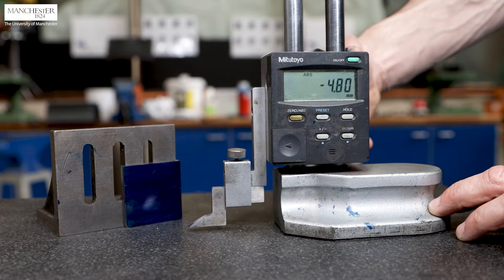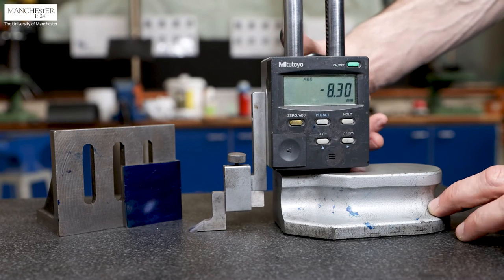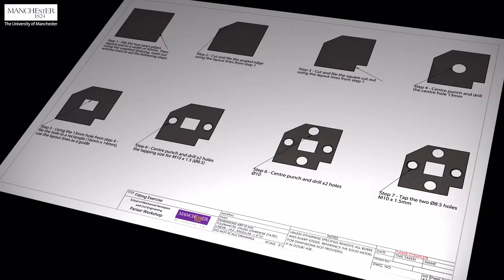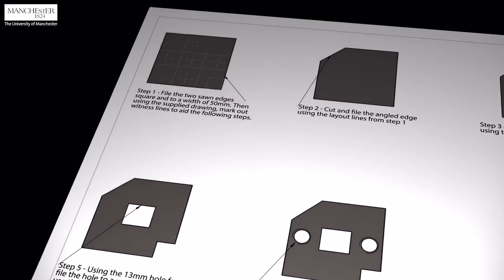This is the vernier height gauge and surface plate to mark reference lines at accurate positions. Let's see how we can obtain the first stage.